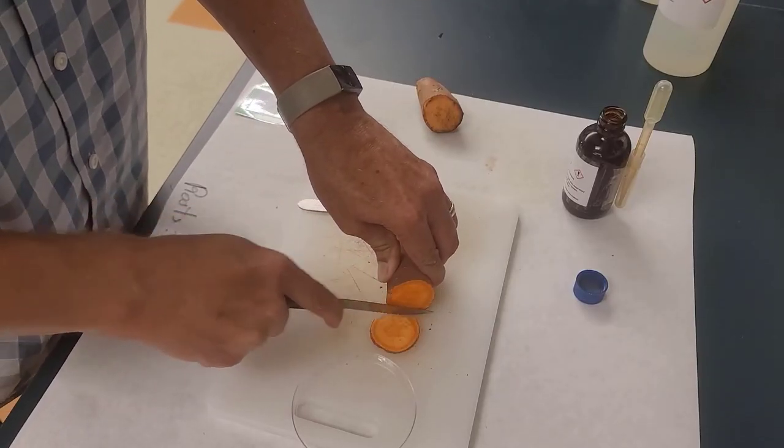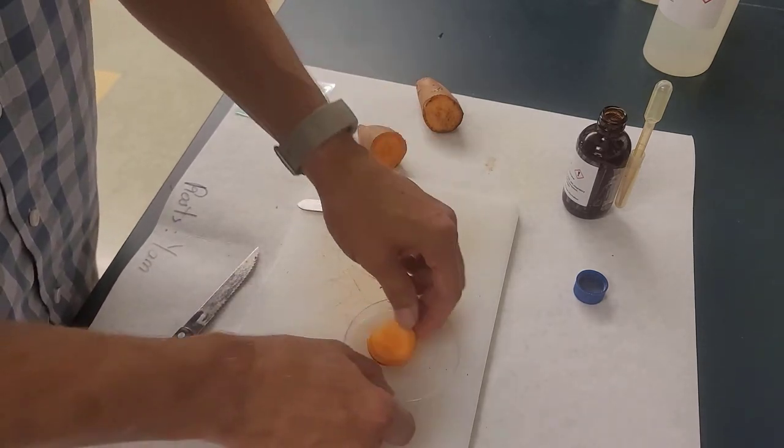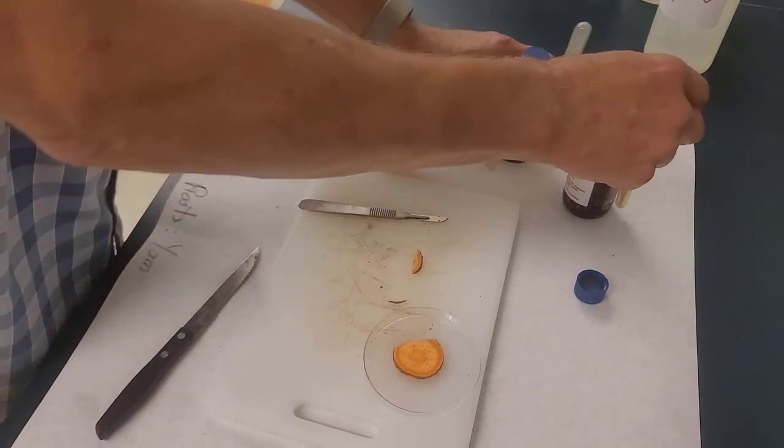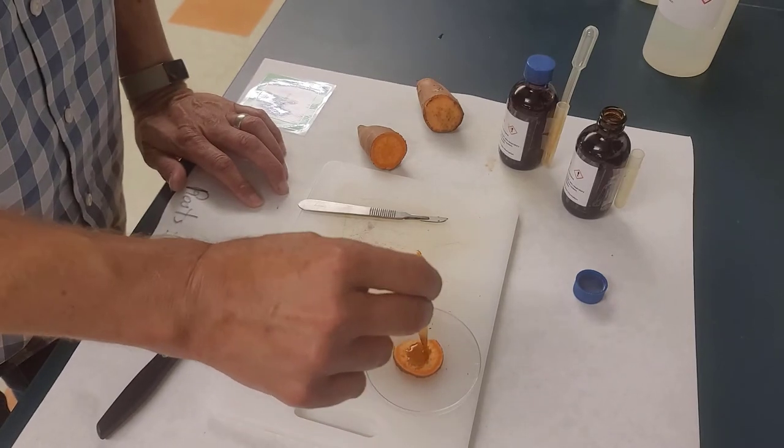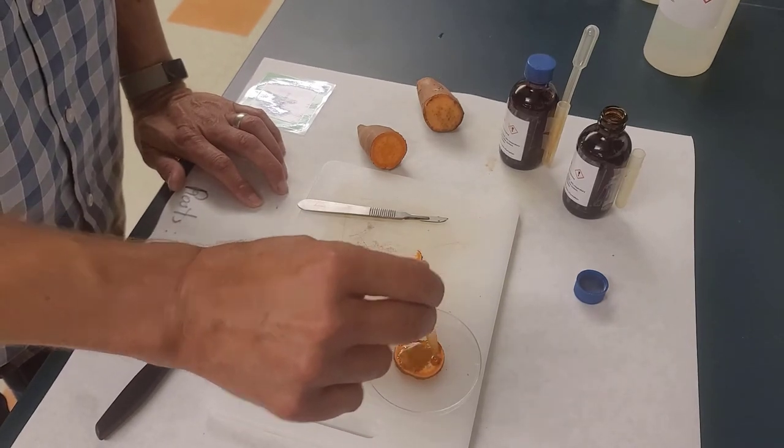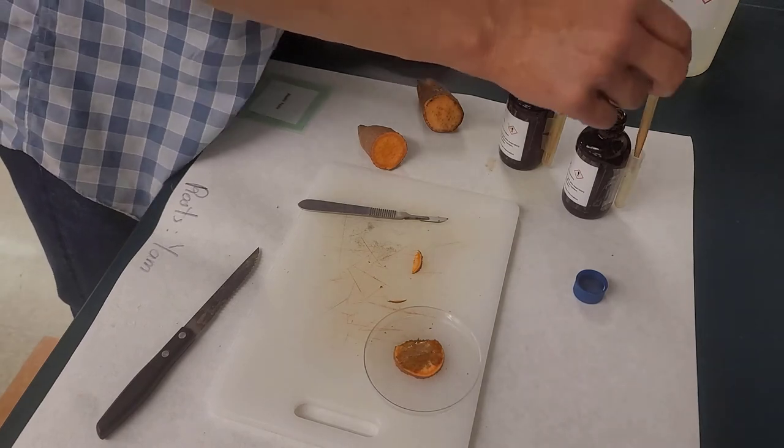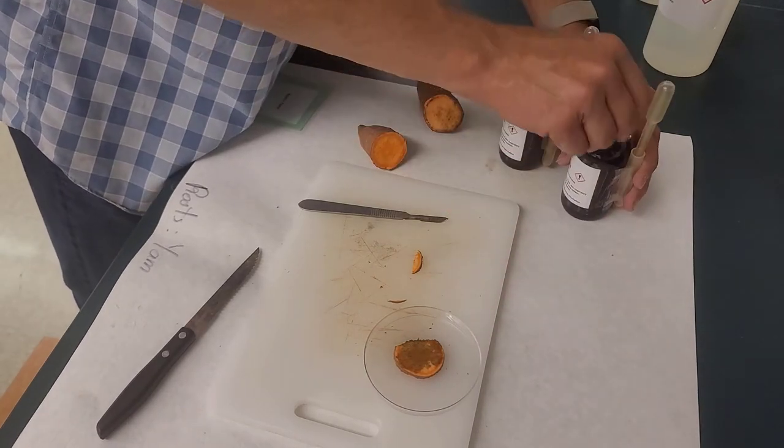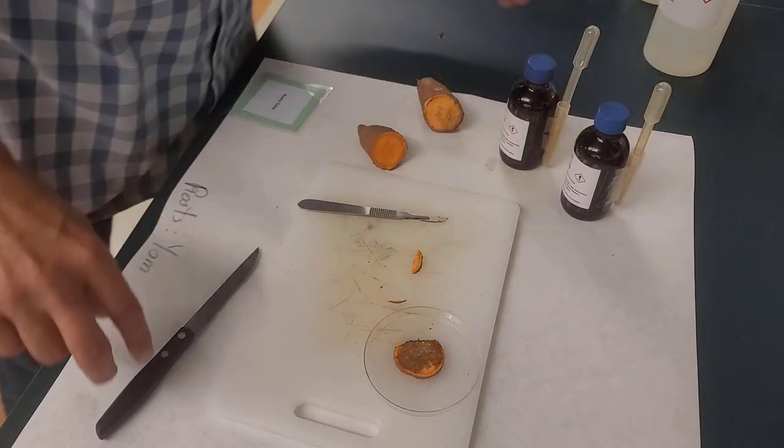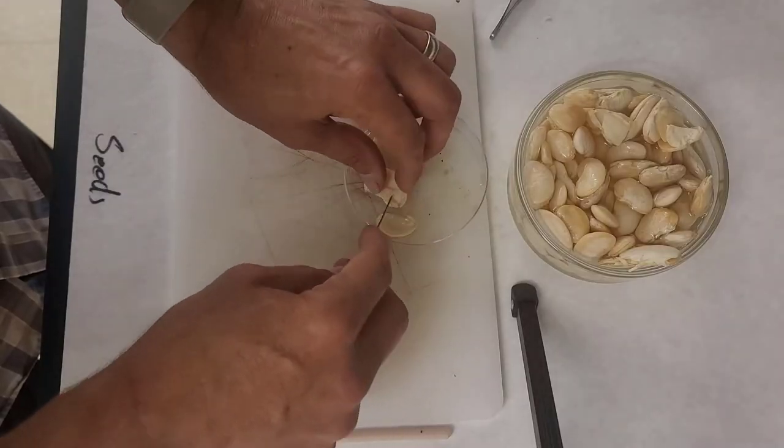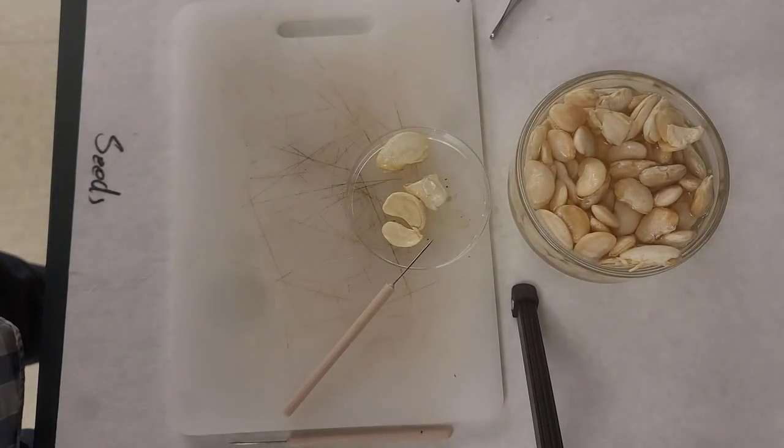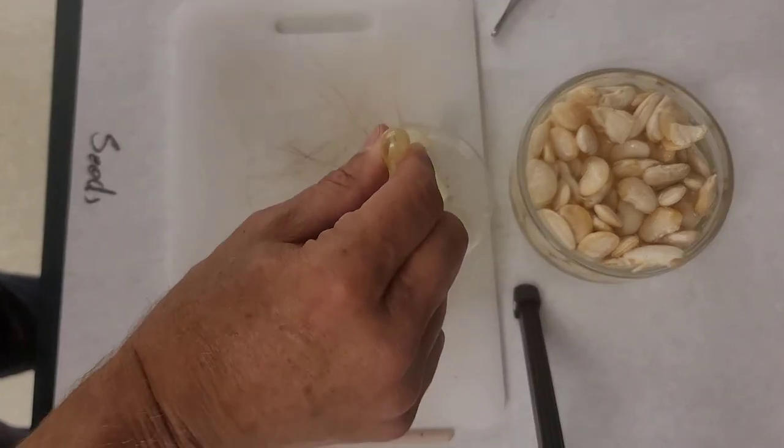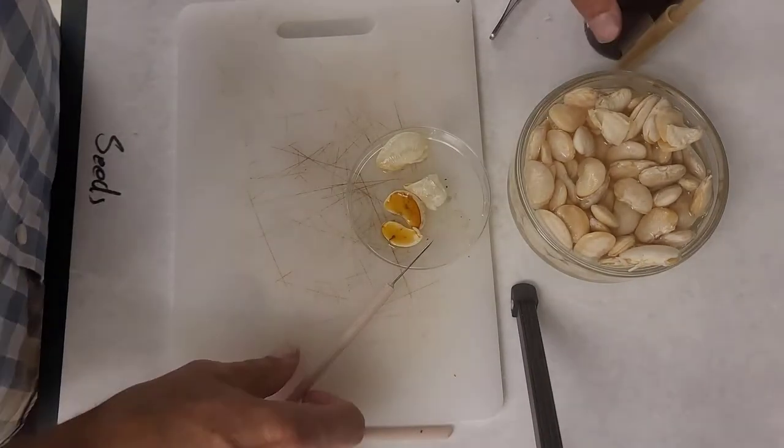So one thing we do is we have you cut up a yam which is a root and we do a test that you might remember we've done before. We're going to put some iodine on top of our yam like that and we'll let it sit there for a couple of seconds, maybe a couple minutes. Then we're going to do the same thing with a lima bean, so we're going to take a lima bean and we're going to open it up and put iodine on that as well.